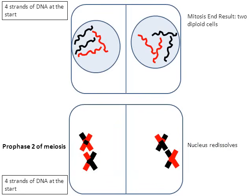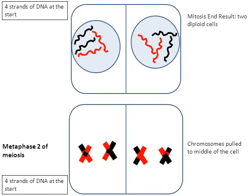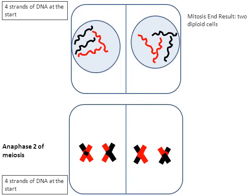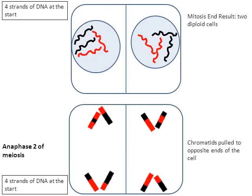Continuing on to metaphase number two of meiosis, the chromosomes are going to be pulled to the middle of the cell — pulled by the spindle fibers. Moving on into anaphase number two of meiosis, now the chromatids are going to be pulled apart. The chromatids get pulled to opposite ends of the cell: one chromatid went to the top, the other chromatid went to the bottom. So the chromosomes that were lined up in the middle during metaphase were ripped apart with one chromatid going in each direction.